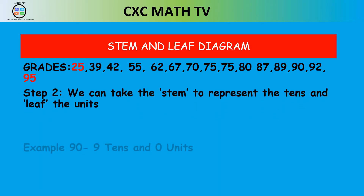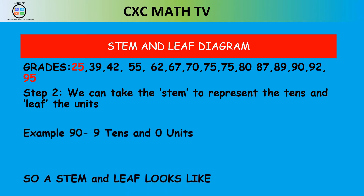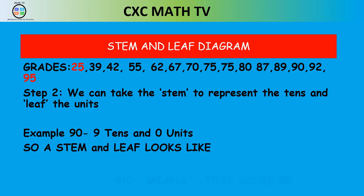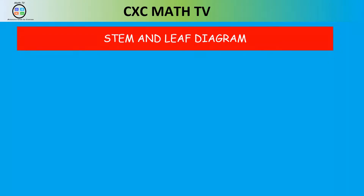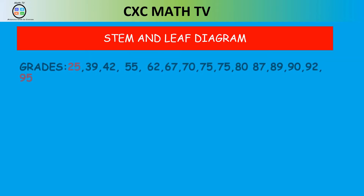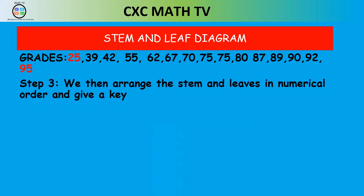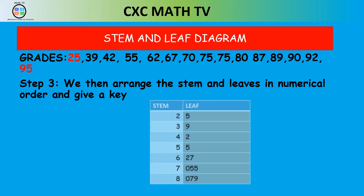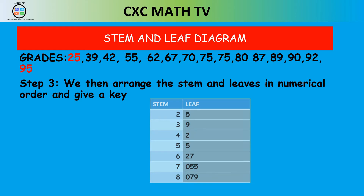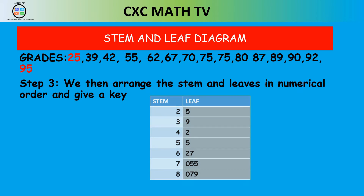For example, 90 is nine tens and zero units, so the stem-leaf notation is 9|0, meaning a test score of 90. Similarly, 8|0 means 80, and 7|5 means 75. To create the stem, we use 1|0 to represent 10 and so on, listing stems from 2 through 9. The lowest test score is 25, so we put 5 as the leaf for stem 2.